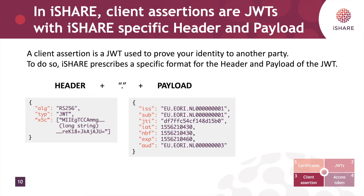In iShare we prescribe a very specific format for the header and the payload of a JSON web token. Let's first discuss the header. The header has three values: the alg field, the typ field, and the x5c field. The alg field must be RS256 in iShare as that's the only algorithm we support for signing JSON web tokens. The typ must be JSON web token as that's the token we will be sending. And the x5c value is that long value we discussed in certificates, which is the public part of the certificate that will be signing this JSON web token. In this case the x5c value of the party ABC Trucking is used.